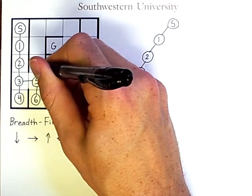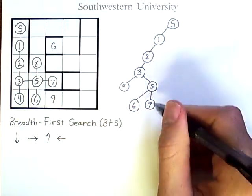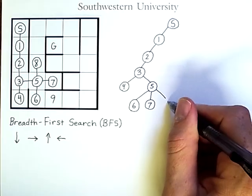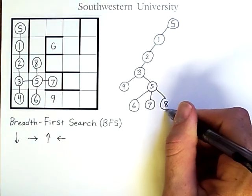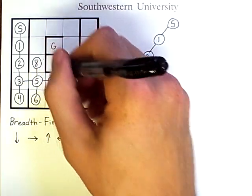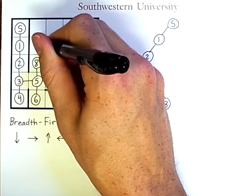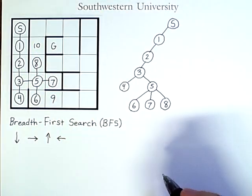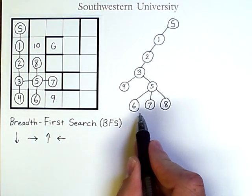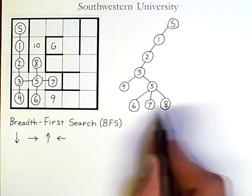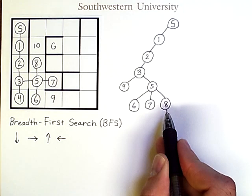Next, I check node eight, add it to the tree, and it does have one successor, which will be the tenth node I search. Notice that I searched all the nodes at this depth of the tree, and only now will I consider nodes that are deeper.